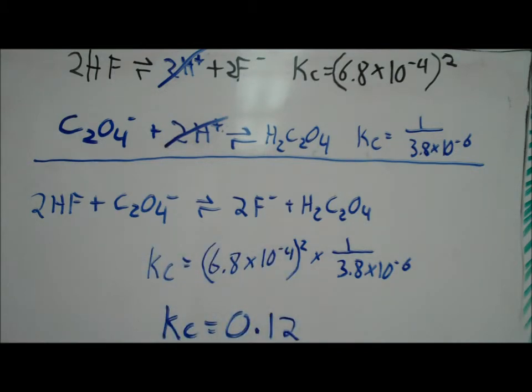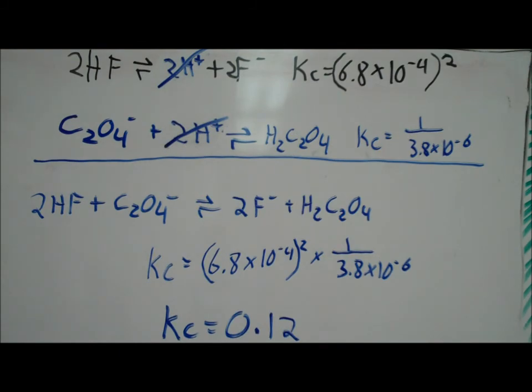So this gives us 6.8 times 10 to the minus 4 squared times 1 over 3.8 times 10 to the minus 6. If we plug this into our calculator, we should get an equilibrium constant value of 0.12. This has been my explanation of how to combine equilibrium constant values.